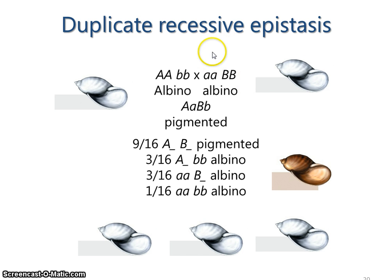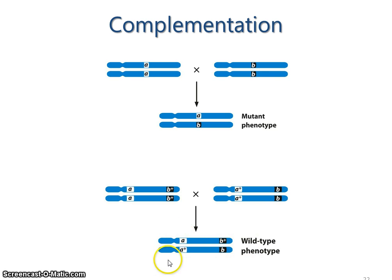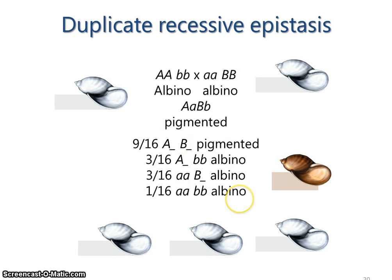This pattern may be indicative of two independent pathways that can influence albinism. This is actually reminiscent of complementation — a connection pointed out by an observant student. Here we have, effectively, big B big B little a little a crossed with big A big A little b little b, and when we cross them we get the wild-type phenotype because now we're a dihybrid, heterozygous at both loci, which is basically what's happening here. So duplicate recessive epistasis is closely related conceptually to complementation.